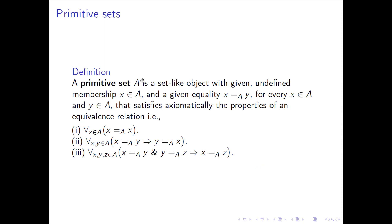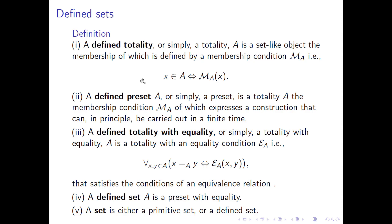A primitive set is a set-like object with a given equality and membership condition that satisfies axiomatically the conditions of an equivalence relation. The only primitive set is N. Then we have defined sets: a defined totality given by a membership condition; a preset, which is a defined totality whose membership condition expresses a construction that can be carried out in finite time, at least in principle; a defined totality with equality where you prove the equivalence relation conditions; and a defined set, which is a preset with equality. A set is either primitive or defined.